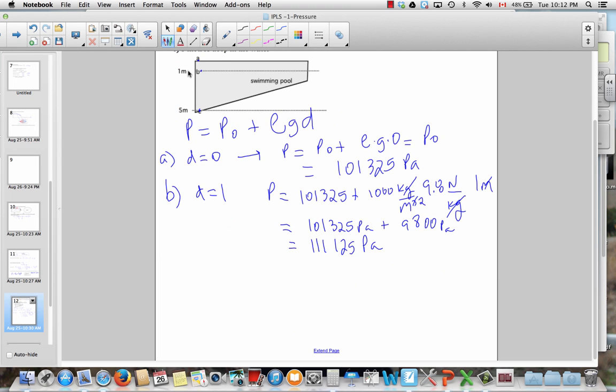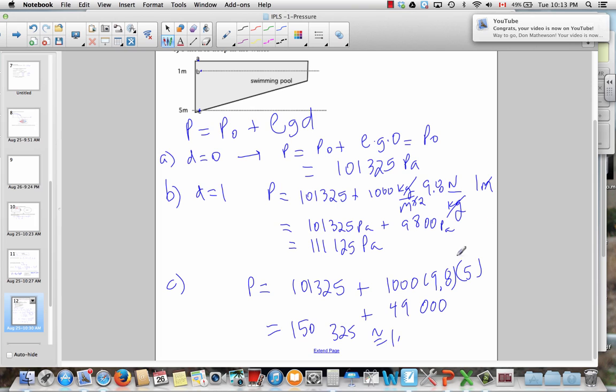And the last problem says, at 5 meters of depth, with the depth as 5, well, what happens here is, okay, we did the units once, so I'm going to drop them now. There's the density of water, gravitational field strength, and the depth of 5 meters. This works out to be 49,000, which is getting up to about half of an atmosphere. So, this is going to be 150,325, and that's about 1.5 atmospheres. That's good for that. And so, 5 meters of water is about half an atmosphere. 10 meters of water is an atmosphere.